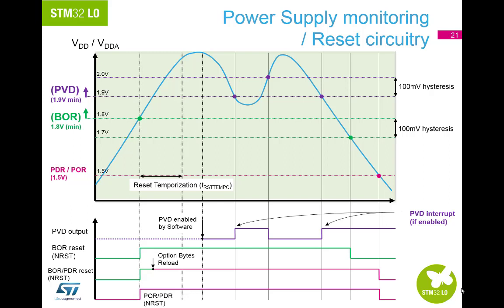The device remains in reset mode when VDD is below a specified threshold — voltage power-on reset, voltage power-down reset, or voltage brownout reset — without the need for any external reset circuitry. The device also features an embedded programmable voltage detector (PVD) that monitors the power supply and compares it to a threshold. Seven different PVD levels can be selected by software between 1.85 volts and 3.05 volts with a 200 millivolt step. An interrupt can be generated when supply drops below the PVD threshold; the interrupt service routine then generates a warning and/or puts the MCU into a safe state. The PVD is enabled by software.